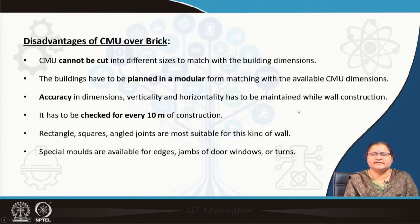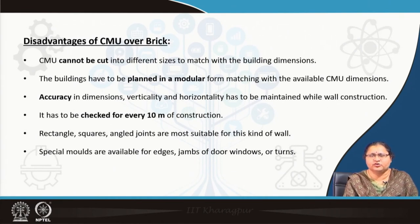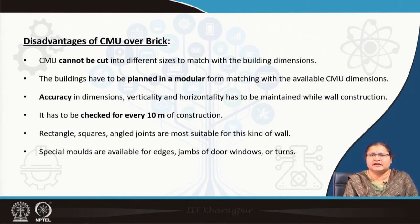Disadvantages: they cannot be cut into as many shapes or sizes as you want. Buildings are to be planned in a modular way matching the dimensions of the CMU. Accuracy is very important — for every 10 meters there should be a check. It is preferred that shapes are square or rectangular; angles are not much suitable. Special pieces can be ordered or manufactured according to requirement.